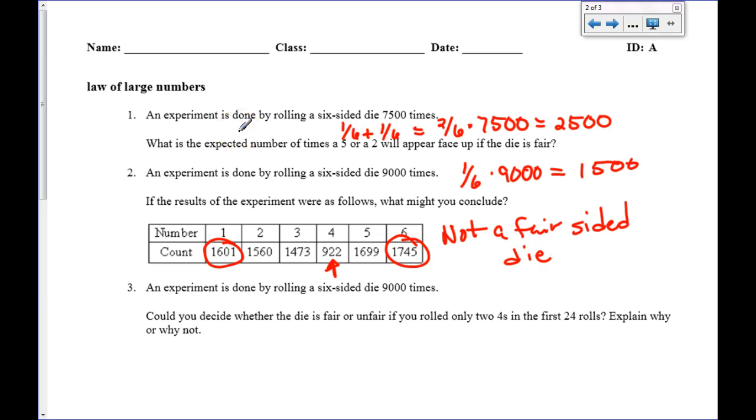On number 3, the experiment is done by rolling a 6-sided die 9,000 times. Well, this is plenty of times to figure out if the experiment has fair die. But, here it says, can you decide whether the dice is fair if you roll the two 4s in only the first 24 rolls? Well, 24 rolls is not nearly enough to have the law of large numbers. We need many more than that. So, really, for us to really determine if it's fair or not, we really need to carry the experiment through.